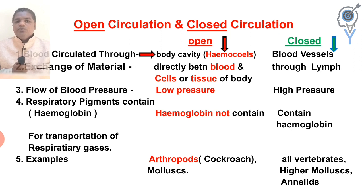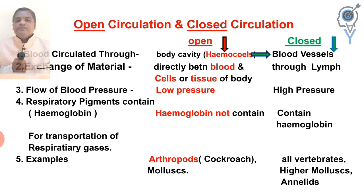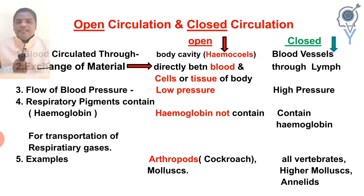In the open circulatory system, blood circulates through the haemocoel body cavity. In closed circulation, blood circulates close to the blood vessels. The exchange of materials occurs directly between blood and tissues in open circulation.